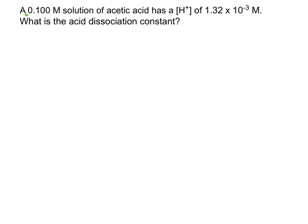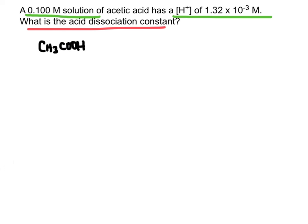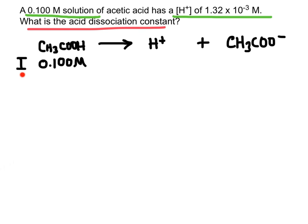Now let's try calculating one of these constants. The problem says a 0.1 molar solution of acetic acid has a hydrogen ion concentration of 1.32 × 10⁻³ molar. What is the acid dissociation constant? The first thing to do is write out the dissociation chemical reaction. Acetic acid dissociates into H+ and the acetate anion. We set up an ICE chart: the initial concentration of acetic acid is 0.1 molar, and the initial concentrations of H+ and the anion are both 0 because nothing has split apart yet.